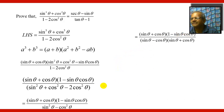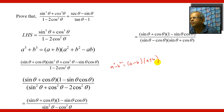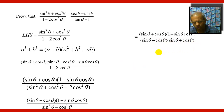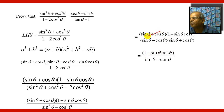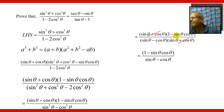So the numerator remains as it is. In the denominator, sin²θ minus cos²θ is like a² − b² = (a − b)(a + b), so the denominator becomes (sinθ − cosθ)(sinθ + cosθ). The (sinθ + cosθ) bracket cancels, and you get (1 − sinθcosθ) upon (sinθ − cosθ).